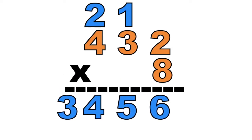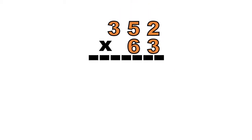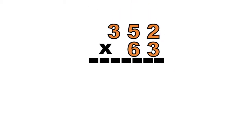How about if we have this? 352 times 63. So let's multiply digit 3 on each digit of the first factor. 3 times 2 equals — that's correct! It's 6.